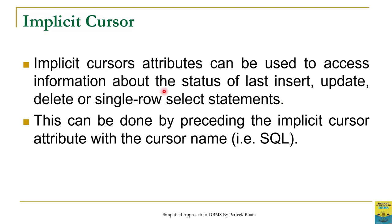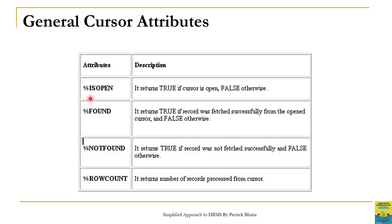To access this information we need to use cursor attributes. There are four types of cursor attributes, and we are talking about general cursor attributes, meaning these cursor attributes are available for both implicit as well as explicit cursors. These cursor attributes are %IsOpen, %Found, %NotFound, and %RowCount.